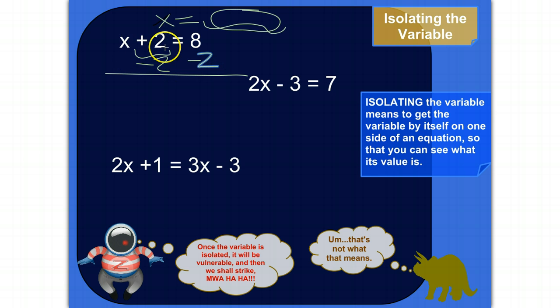So two minus two is zero. So that just disappears. So all we have left on this side is x and then eight minus two is six. So now all we have on this left side of the equation is x. So I can step back, take stock of the situation and say to myself, self, what does x equal? Well, x equals six.